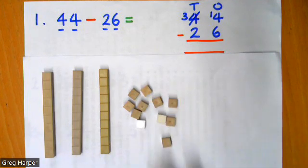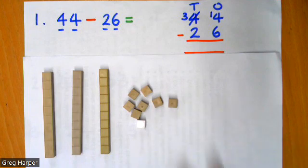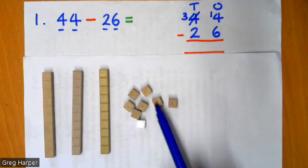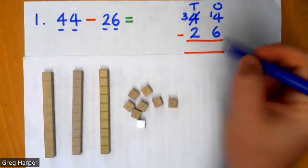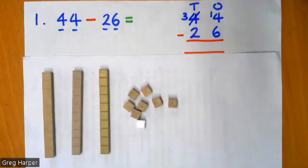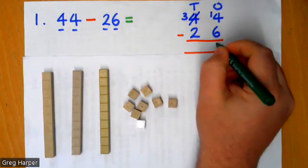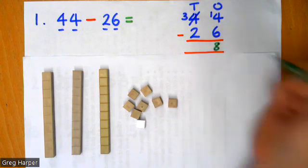So I've got my 14 ones, I'm going to take away six of them. One, two, three, four, five, six. And I'm going to count what I've got left. One, two, three, four, five, six, seven, eight. So I know 14 take away six is eight.